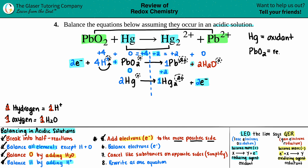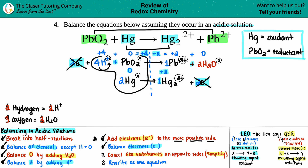That side note on oxidant and reductant comes from step five. Now step six: balance the electrons so they are the same number in both half reactions. We have two electrons in each equation — they're already balanced, so we can move on. Step seven: cancel like substances on opposite sides. The two electrons cancel out. Looking across both equations, I don't see anything else that matches, so step seven is done.